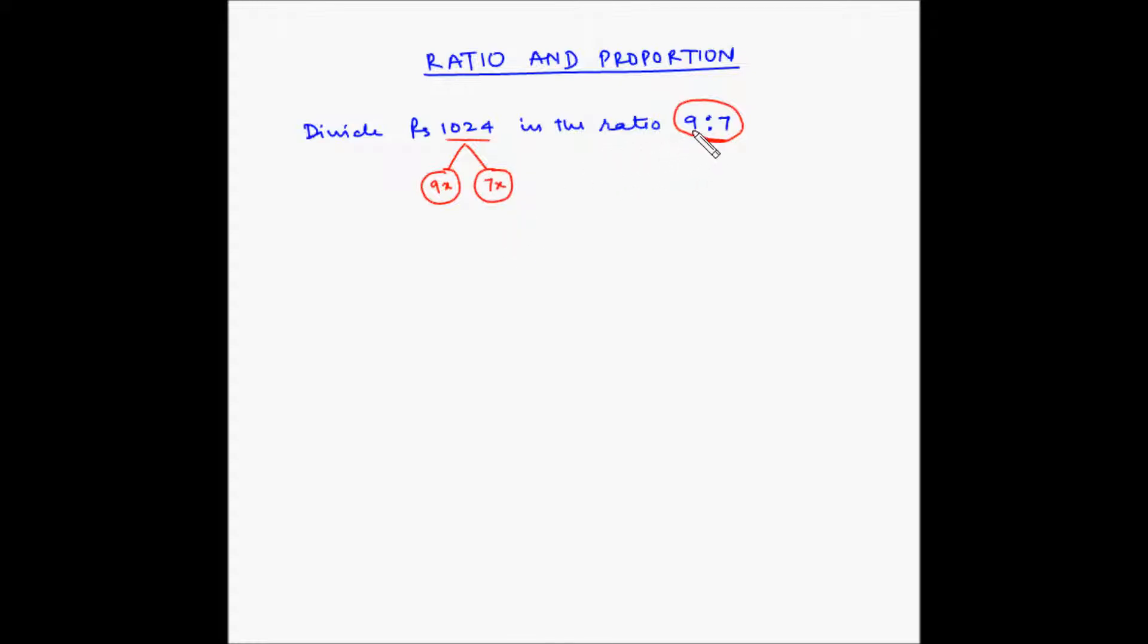Let us further understand this. 9 is to 7 can be written as 9 by 7. This is the ratio in which we want to divide rupees 1024. Now, for ratios, we know that we can multiply the numerator and denominator with any number but the number should be the same. Let us say we multiply this by x, the denominator also needs to be multiplied by x. This can be the same as 9x by 7x because basically you can then cancel x with x and it becomes 9 by 7 is the ratio.